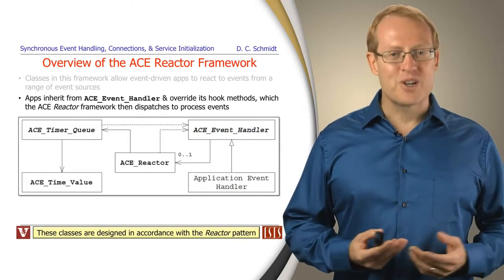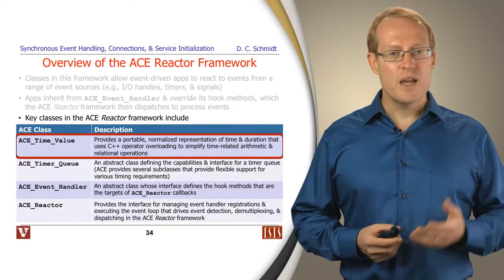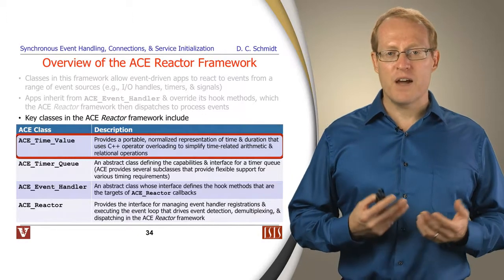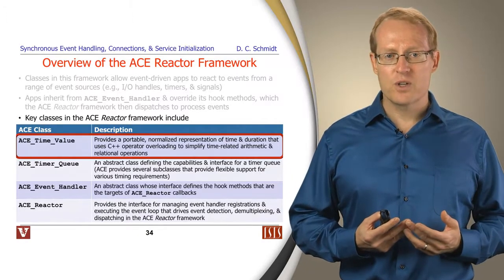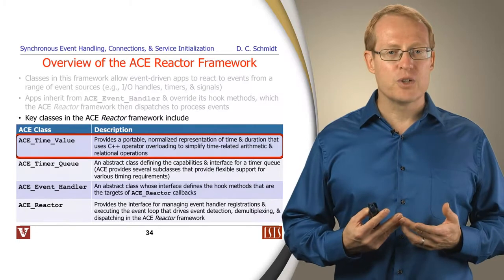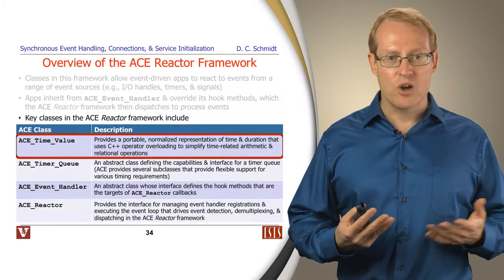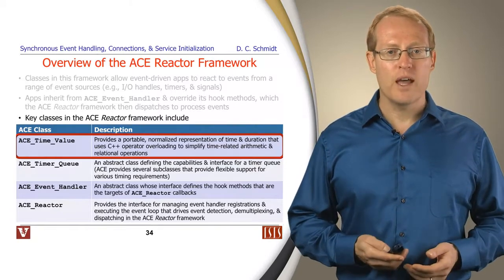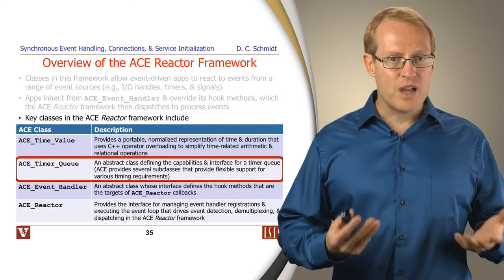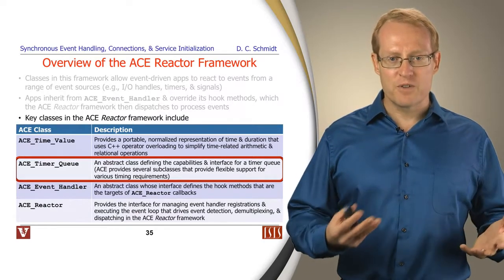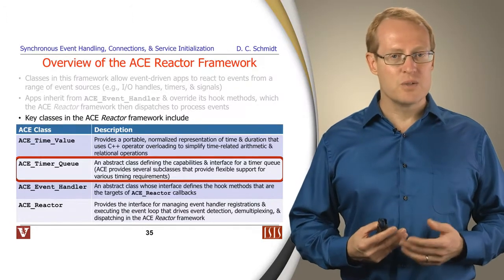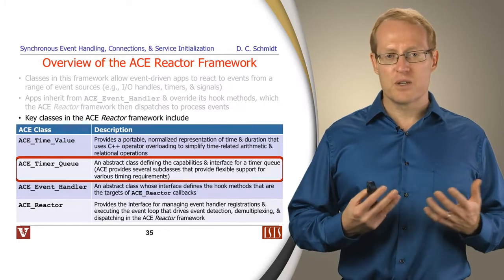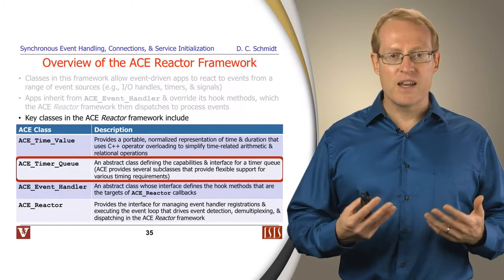These classes, of course, are designed in accordance with the reactor pattern. Here are some of the key classes that the ACE Reactor Framework provides. We'll talk about them one at a time. It provides something called ACE Time Value, which is a class that normalizes time and lets you do various kinds of relational and arithmetic operations on time values, so you can compare them and add them and subtract them in a clean and portable way. It also provides something called the ACE Timer Queue, which is a base class for a whole family of different timer queue management mechanisms, various things using timer wheels and timer heaps and timer lists and so on in order to be able to dispatch timeout handlers very conveniently and efficiently.